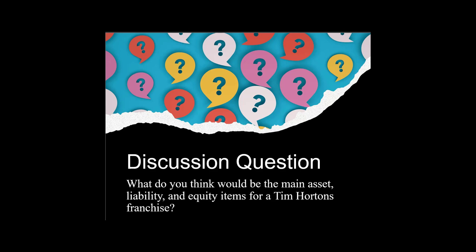Your answers can vary, but this is about developing professional judgment and accounting fluency. If I didn't know anything else about Tim Hortons, I'd say there's probably going to be cash — the lifeblood of a business — land and buildings because everywhere I look there are buildings sitting on land. And if there are buildings, maybe there are mortgages. Since Tim Hortons is a public company, there'll be common shares, maybe preferred shares, and definitely retained earnings.